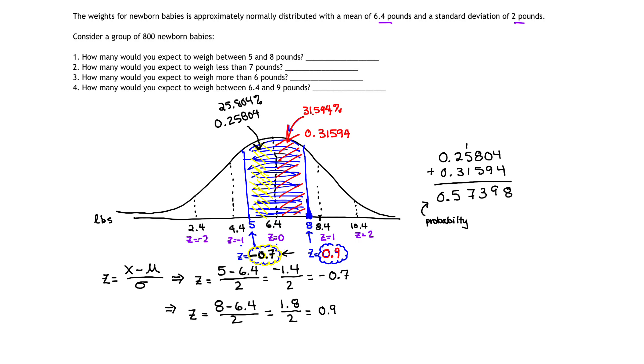If I want to actually calculate the number or how many, well, now I have to go back to my original number, which says there are 800 newborn babies. And so I have to take 800 total babies and multiply that by 57.398%, or if I like, multiply that by 0.57398.